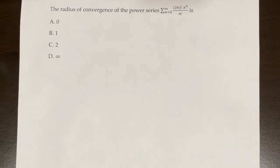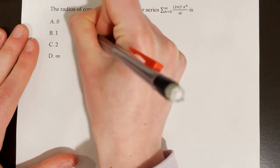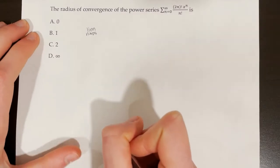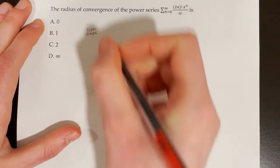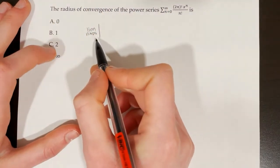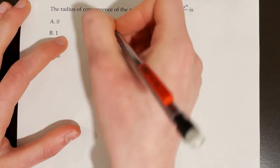The radius of convergence of the power series from n equals 0 to infinity of 2n factorial times x to the power of n over n factorial — that's what we have to figure out. Let's start by using the ratio test. If we go through the process for finding the radius and interval of convergence, we'll take the limit as n approaches infinity of the absolute value of a sub n plus 1 over a sub n.